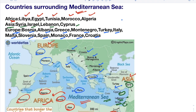So the total is 12 plus 4 plus 5 — that is 21 countries are bordering the Mediterranean Sea. Now let's see how to remember all these countries with a trick.